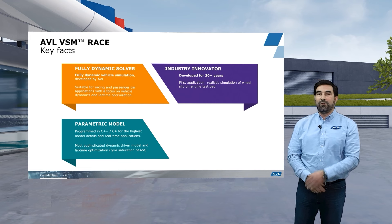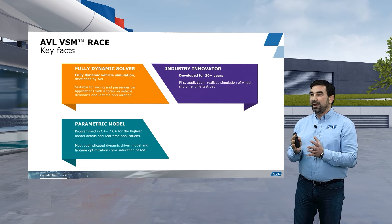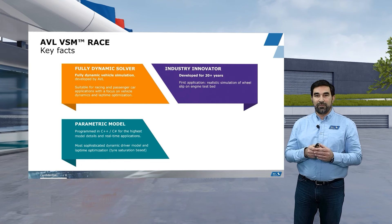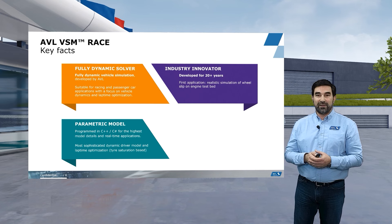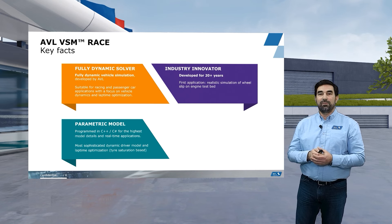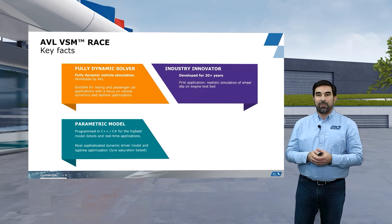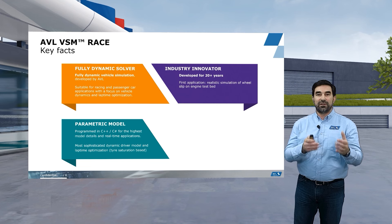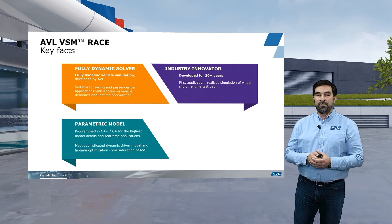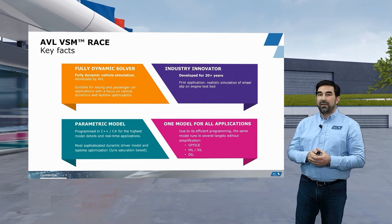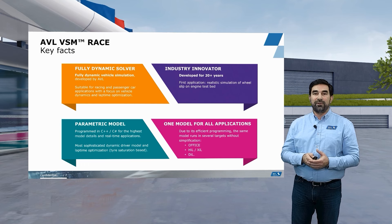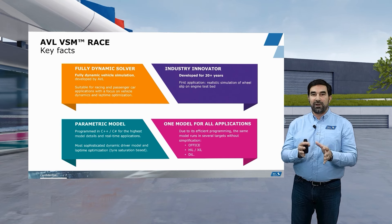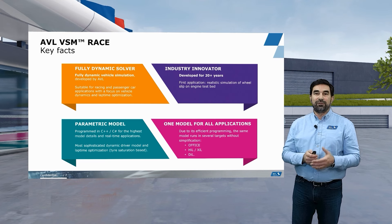VSM features a parametric model — the whole software is programmed in C++ and C#. We have very detailed models with various degrees of complexity depending on what the customer needs, and we are always real-time capable, which is understandable given that the birthplace of VSM was the testbed where real-time capability is a must. We are particularly proud of our very sophisticated dynamic driver model and the capabilities for lap time optimization, which is tire saturation based. That means we look at what percentage of the tire force potential is actually used by the simulation driver, and based on that we can modify the demand speed for the next simulation step. For all different applications — offline simulation, testbed, driving simulator — we always use one single model. Once you have set up and correlated your model, you can use it for all those various applications without the need to redo or modify it.